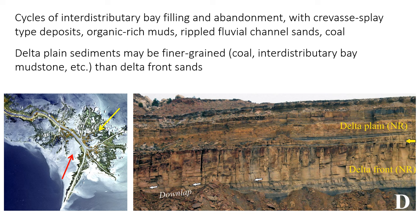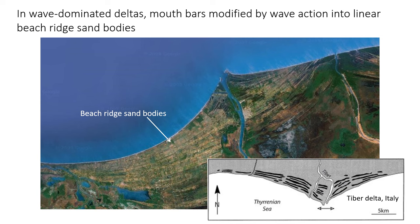Although deltas are typically coarsening-upward successions, one point of caution: the delta plain may actually be significantly finer-grained than the delta front in these interdistributary bay environments, even though the delta plain is a shallower or more proximal setting.